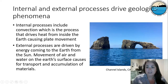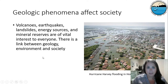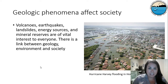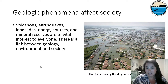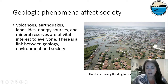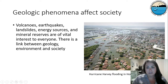Geologic phenomena can affect society. We've already touched on this briefly, but things like volcanoes, earthquakes, and landslides are all vital for everyone to understand — we need to understand the link between geology, our environment, and society. Here's a picture from Hurricane Harvey in Texas in 2017. You can see how high the water actually came — all you can really see is the building tops, just roofs, and flooding was probably 10 to 15 feet high. This affects our society because we need to understand the risks of building in these places and living in areas that could be affected by hurricanes or flooding.